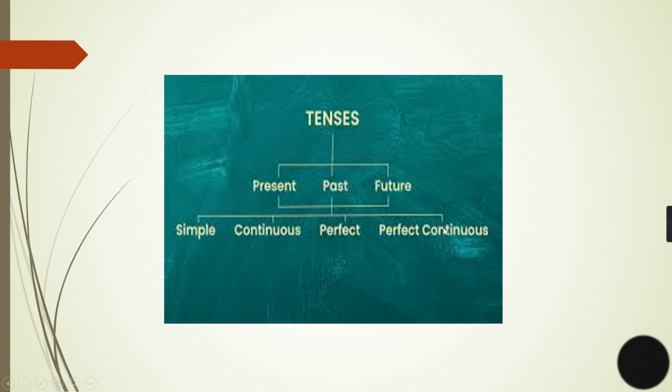Simple, continuous, perfect, and perfect continuous. Simple condition is when we are not sure about the completeness of action. Continuous, when we need it, when we feel like the process is going on. Perfect, when the work is over.